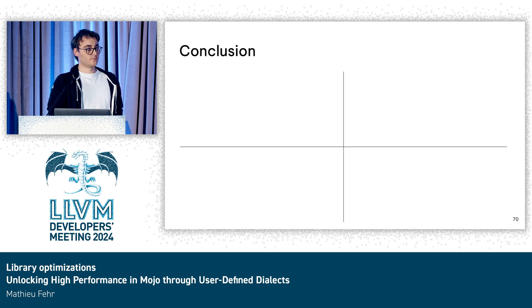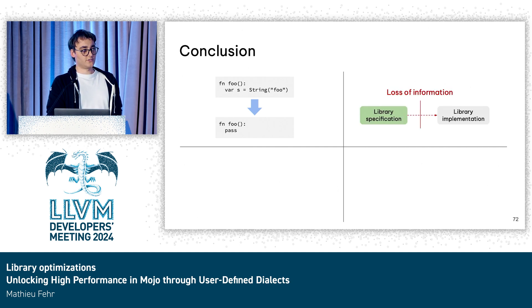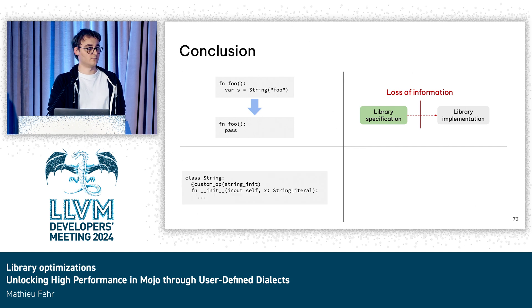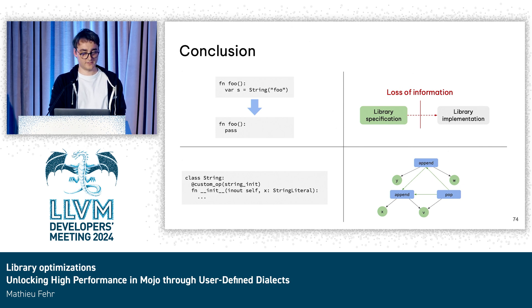In conclusion, there are a lot of library optimizations we want to write. The reason is that information is lost quite early in the pipeline in most programming languages, and we want to solve this issue by being able to write new operations in your language and using memory SSA to simplify everything as pattern-based rewriting. Thank you.